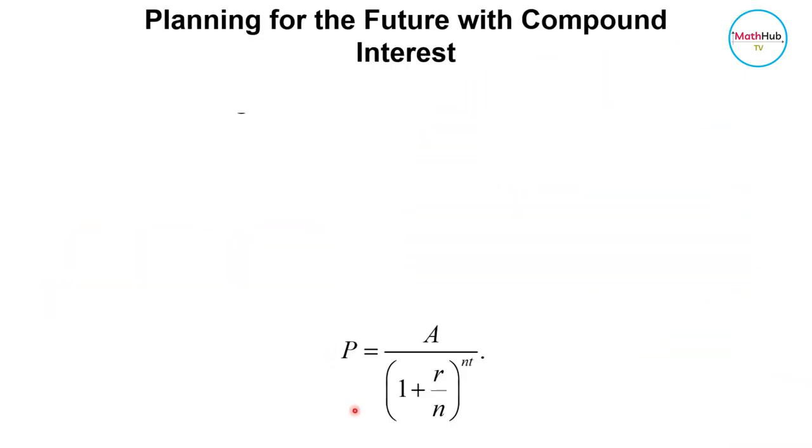This is the formula that you're going to use to compute the present value. We derive it from the formula A equals P times 1 plus r over n raised to nt. Since we are interested to get this value here, we just divide the equation by this expression here, and that's how you get the present value.